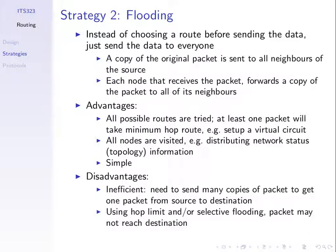Flooding is very simple in that if we have data to send to a node, we send it to everyone. If we send a copy to everyone, then our destination node should receive a copy. Instead of choosing the route first, just send the data immediately — not just across one path, but across all possible paths. A copy of the original packet is sent to the neighbours of the source, those that receive it then send on to their neighbours, and at the end the destination should get a copy.